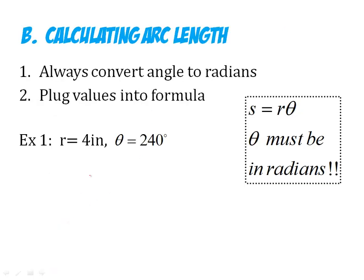To calculate arc length, first thing you always want to do is convert the angle to radians if it's given in degrees. The next thing you do is plug the values into the formula. Here's your formula. S equals the radius times theta. Theta is the angle of your piece of pizza right here. This is my theta. The radius is the length of the radius, obviously. But the thing is, theta has to be in radians.